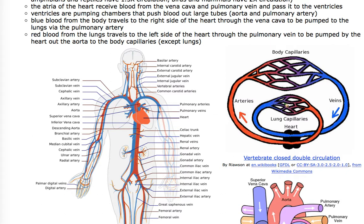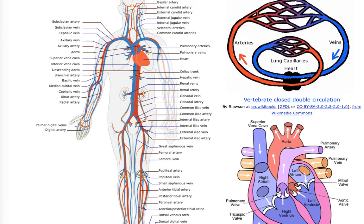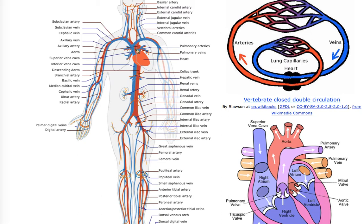In the lung capillaries the blood changes color — it's in there for one second, turns to red, carbon dioxide is exhaled, and oxygen diffuses into the blood. The blood then goes through the pulmonary veins back to the left atrium, then to the left ventricle. The left ventricle pumps blood all the way out to the arteries of the body everywhere except the lungs, where the blood changes from red back to blue and the cycle starts over.